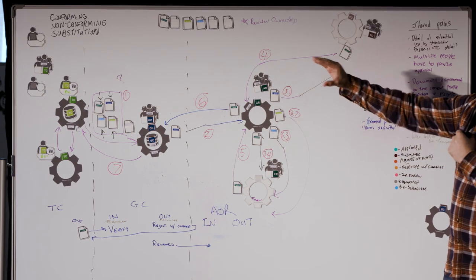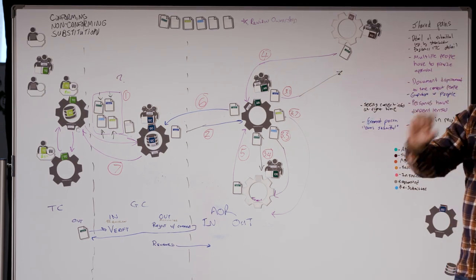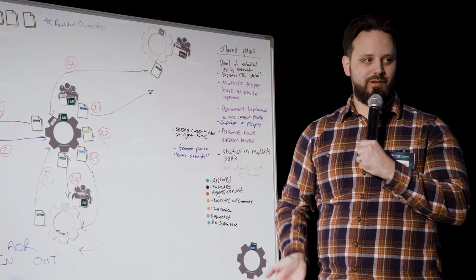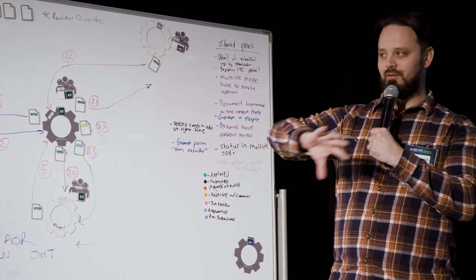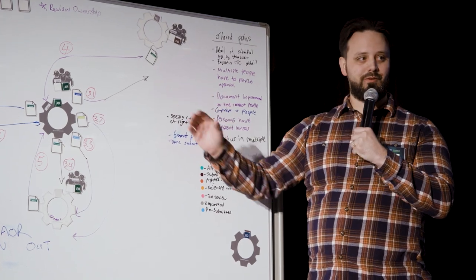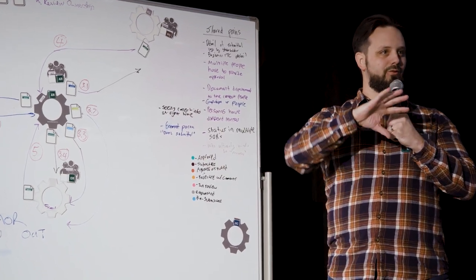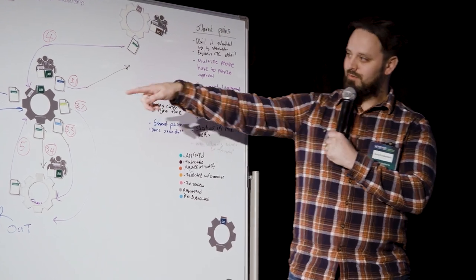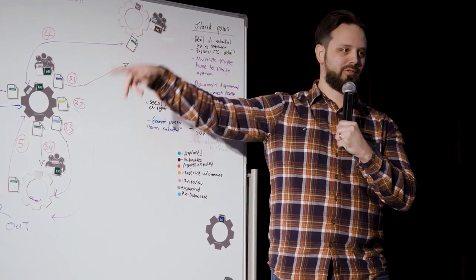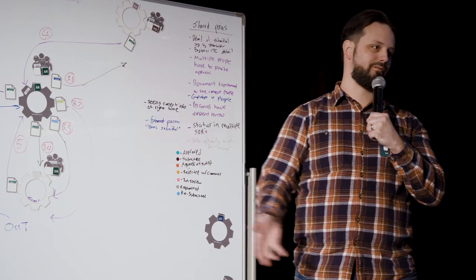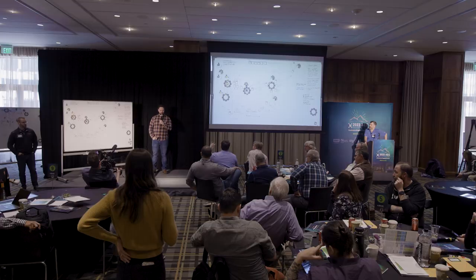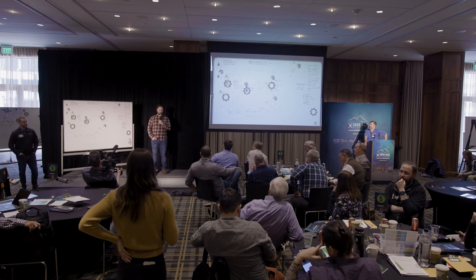For a door, the jam, the doorknob, and the door material all have to be approved before anything gets started — there are interdependencies throughout. If you have things broken down, you want to track what pertains to you and let the rest that doesn't apply go by the wayside.